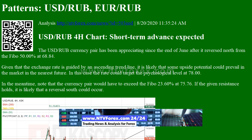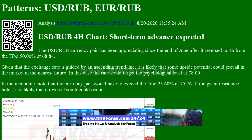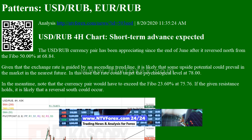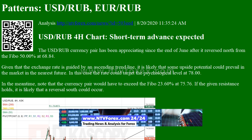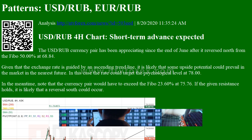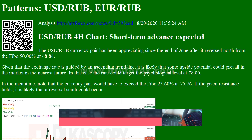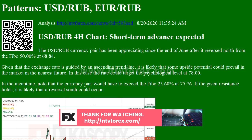The USD/RUB currency pair has been appreciating since the end of June after it reversed north from the FIBO 50.00% at 68.84. Given that the exchange rate is guided by an ascending trend line, it is likely that some upside potential could prevail in the market in the nearest future. In this case, the rate could target the psychological level at 78.00.